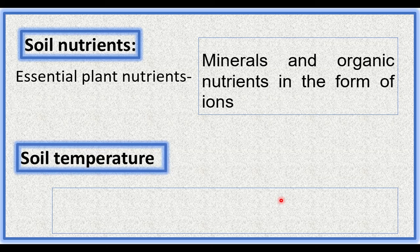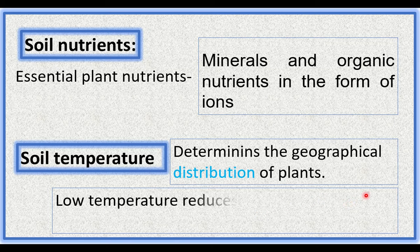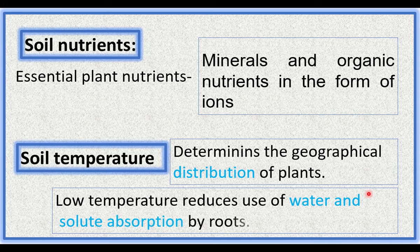Soil temperature decides the distribution of different vegetation on the earth's surface and determines the geographical distribution of plants. When the soil temperature is low, plants reduce water use — they absorb less water and less solutes.